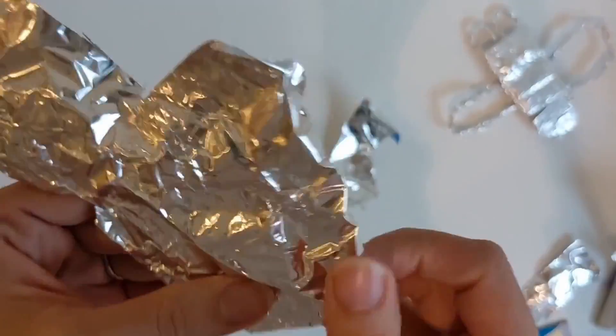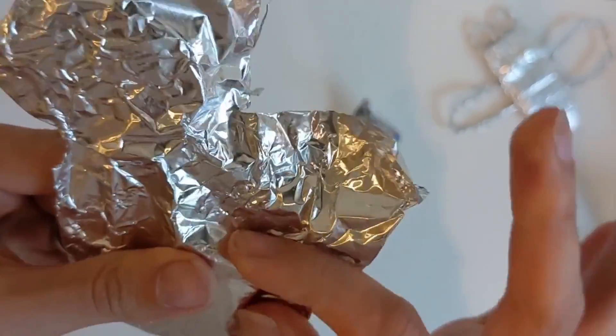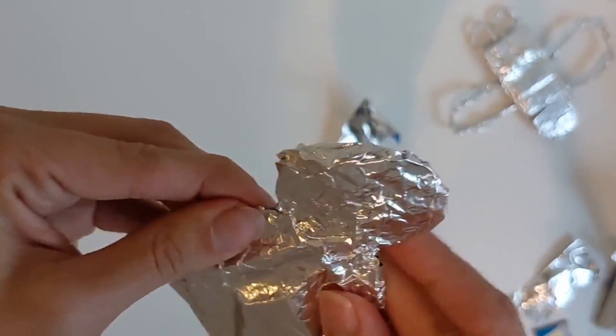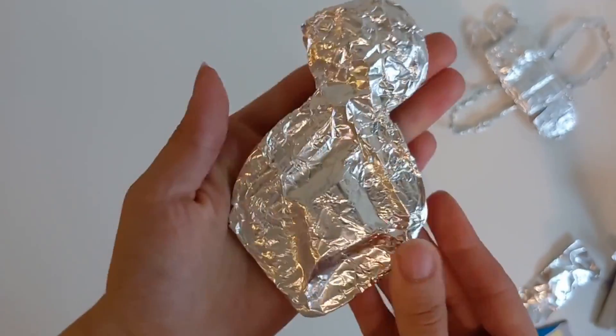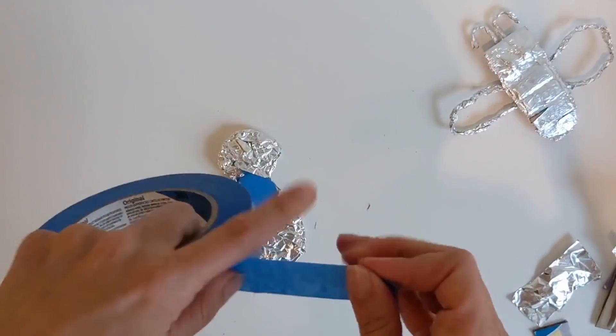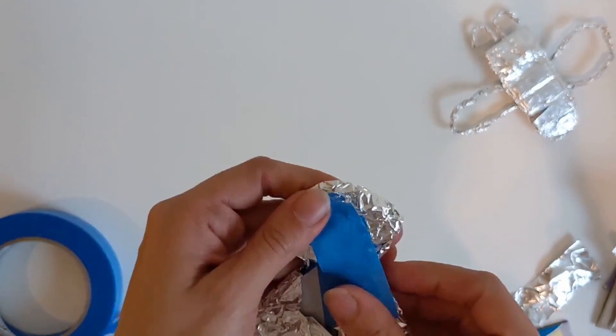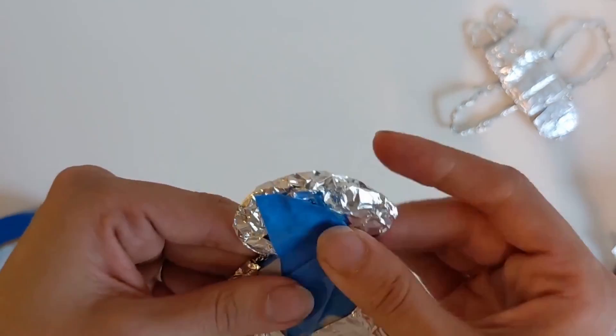Turn your shape around and use the soft part of your fingertip to press as tight as you can. Try not to use your fingernails because that can rip the aluminum foil. Secure the foil on the back of your cardboard shape using masking tape.